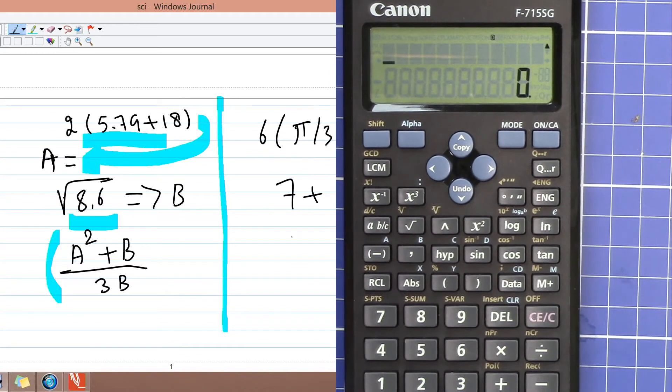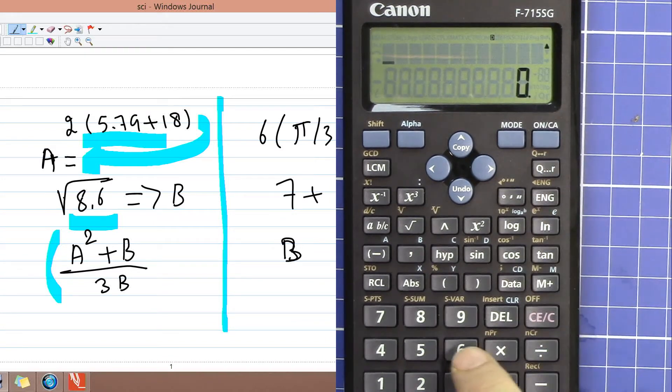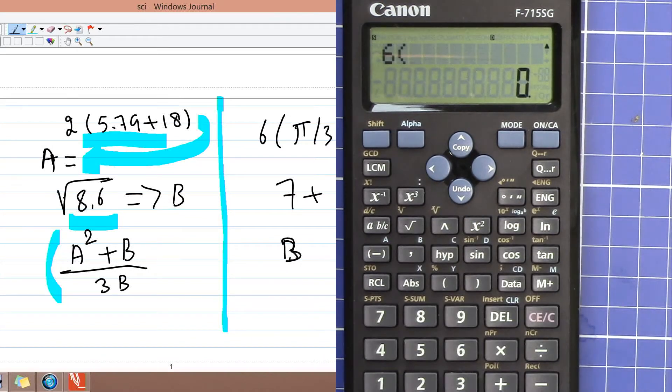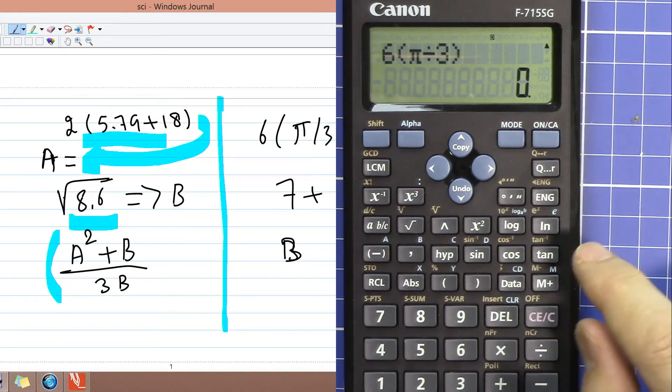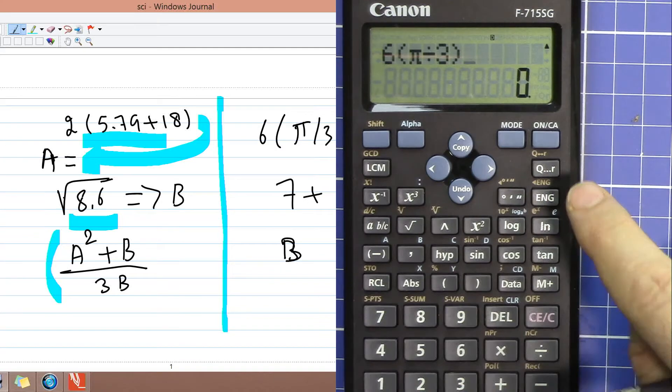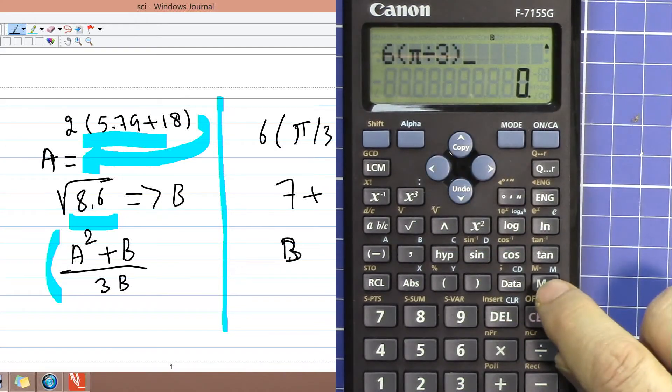Let's say B, you want to add all of those. What you do is you do 6, open parenthesis, shift, pi, divided by 3. Let's say this is the value. So now if I press equal sign it will be the answer, but instead of that, make sure that you don't have any other value. So there is no M. Now I'm pressing plus M.